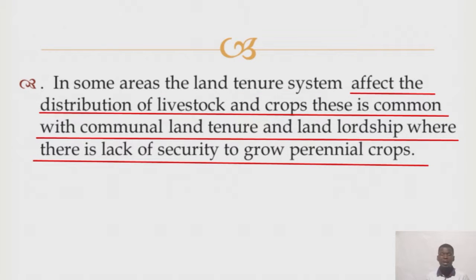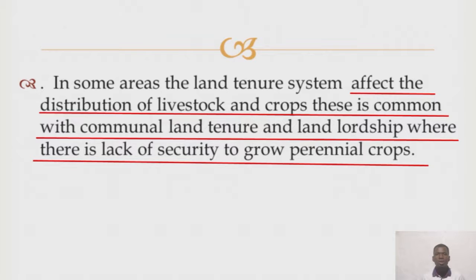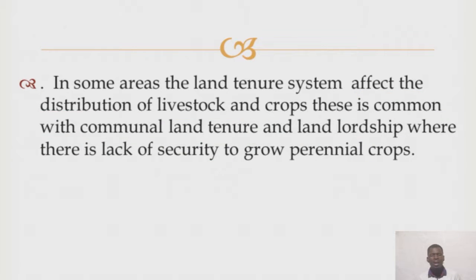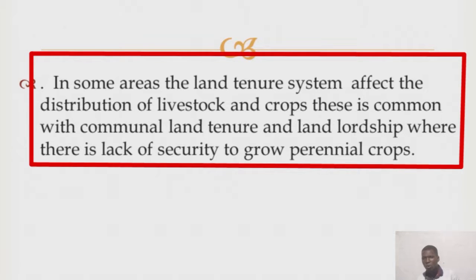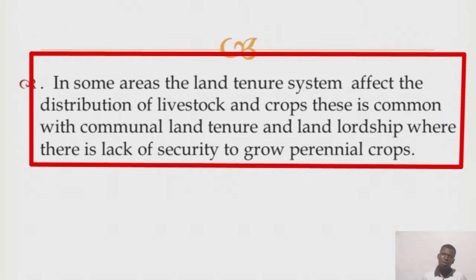Regarding land tenure and its effect on distribution of livestock and crops: in most cases where land is owned by the community — what we call communal land — where the land belongs to the community, you may grow a crop this season and the following season some other person grows a crop in that same piece of land. This also dictates the type of crop grown and the animals reared.